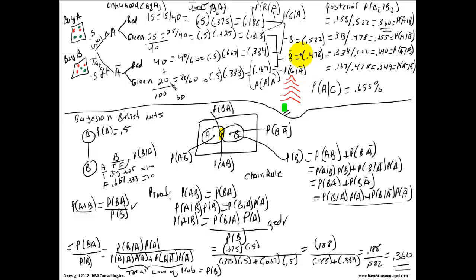From our joints, we simply add the probability of red given it came from Walmart and the probability of red given it came from Target. We get 0.522 for red and 0.478 for green.